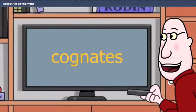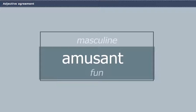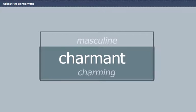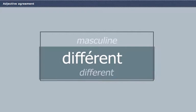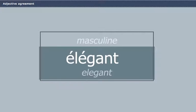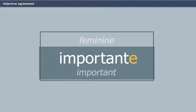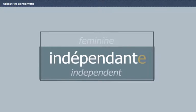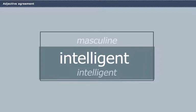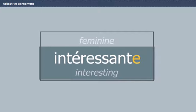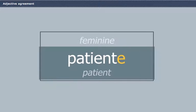The adjectives in this first group work like intelligent and intelligente. Amusant, amusante. Brillant, brillante. Charmant, charmante. Différent, différente. Élégant, élégante. Impatient, impatiente. Important, importante. Indépendant, indépendante. Intelligent, intelligente. Intéressant, intéressante. Patient, patiente.